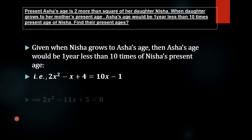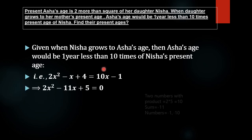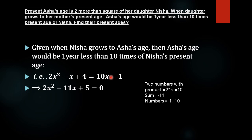Taking 10x minus 1 to the left side, we get the quadratic equation 2x² minus 11x plus 5 equals 0. We have to solve this quadratic equation in order to find the present ages of Asha and Nisha.